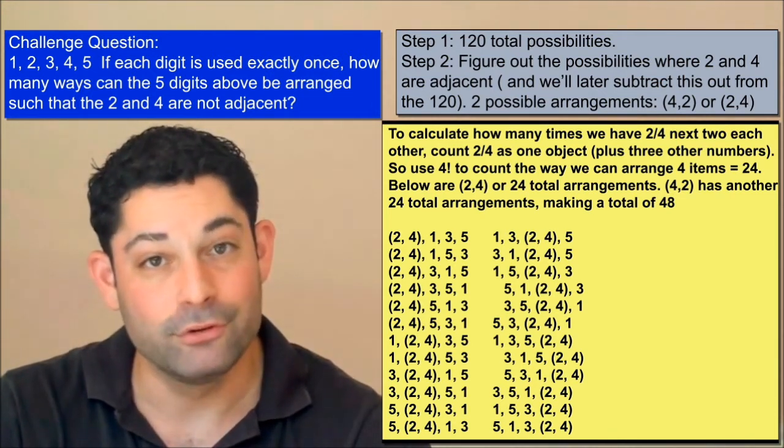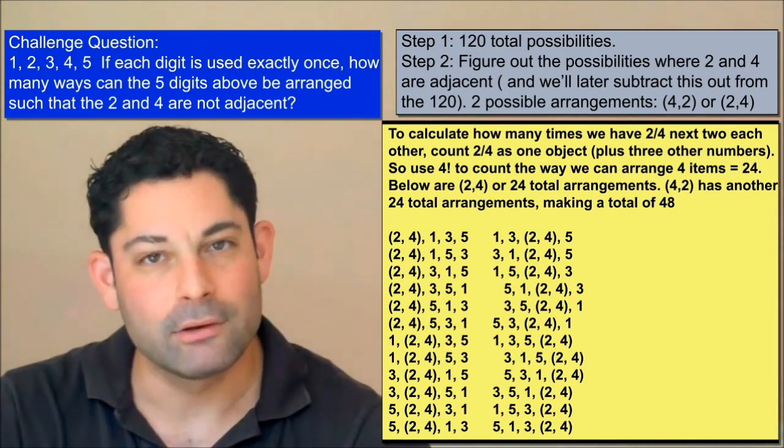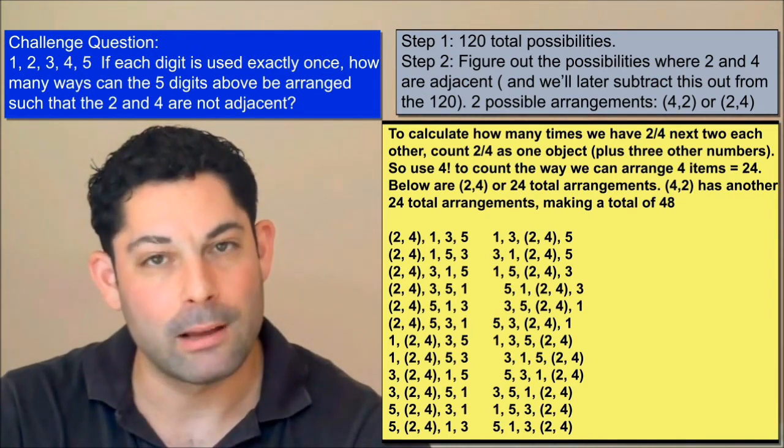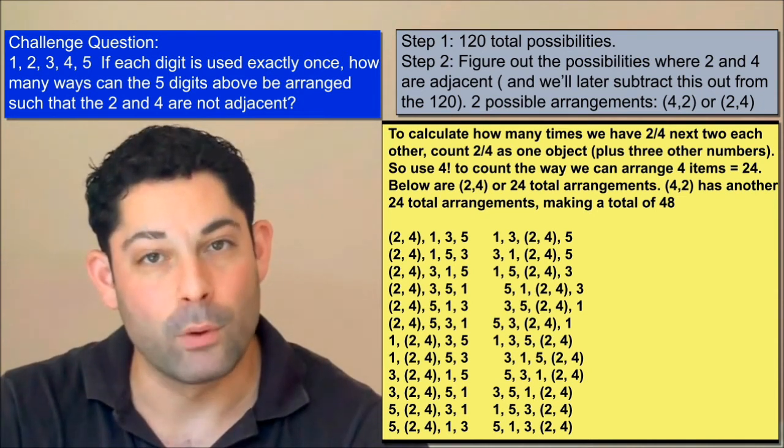In our second step, let's consider the case where two is to the left of the four. This is like calculating the number of arrangements of four objects: one, three, five, and the object two-four.